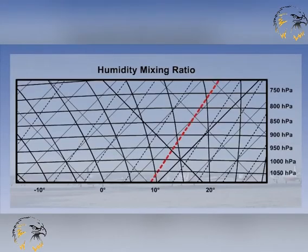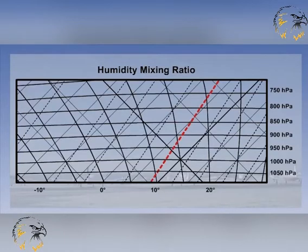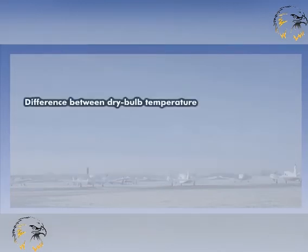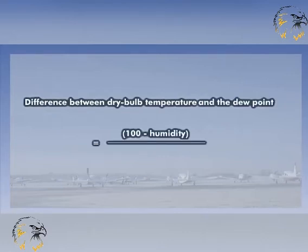The dew point lapse rate varies enormously on any one day, with large changes in both spatial and temporal contexts, but on average, the humidity mixing ratio lapse rate is half a degree per 1,000 feet. A simple rule of thumb is that the difference between the dry bulb temperature and the dew point is equal to 100 minus the humidity divided by 5.